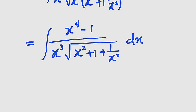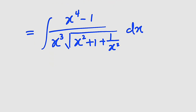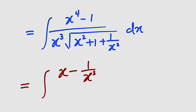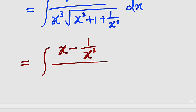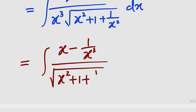We can divide our numerator x to the power of 4 minus 1 by x to the power of 3. So this equals the integral of x minus 1 divided by x to the power of 3, all multiplied by 1 divided by the square root of x squared plus 1 plus 1 divided by x squared, with respect to x.